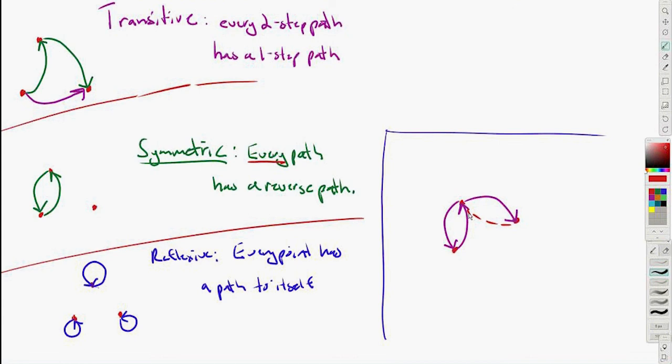Okay, so it has that symmetric property at one point, but to be symmetric every one of these paths have to have a reverse path. To be transitive and to be reflexive, every one of them has to have that little loop right back to itself. So in this case it is not symmetric because it doesn't have this path back here.